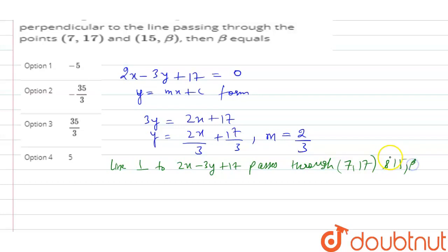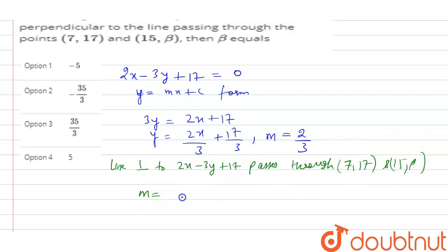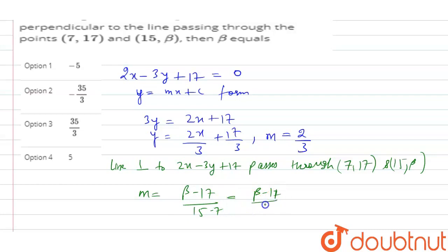So the slope of the line which passes through these two points will be m = (β - 17) / (15 - 7), which gives (β - 17) / 8.